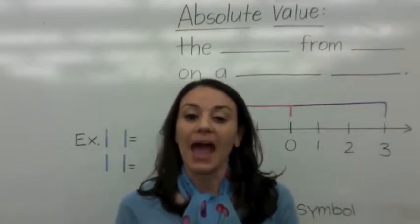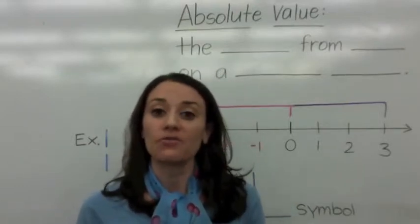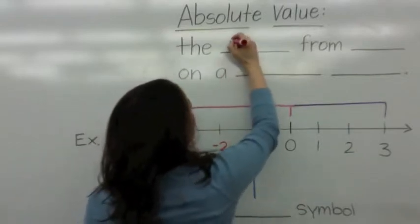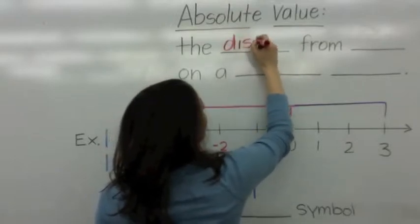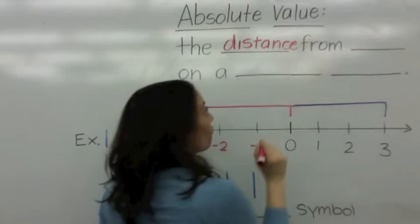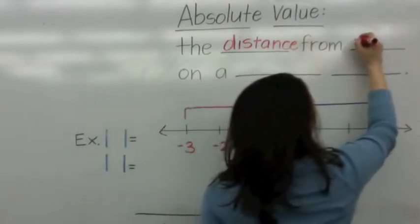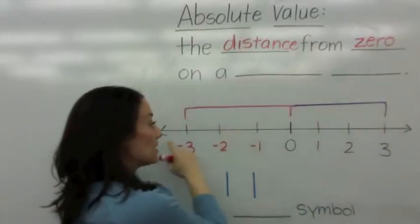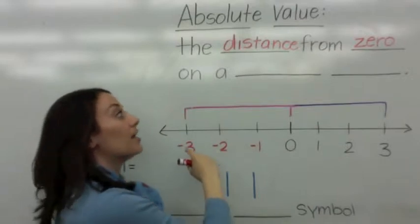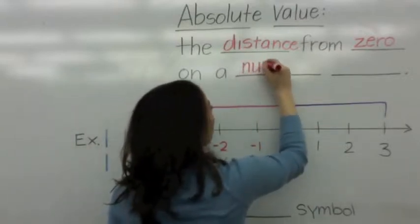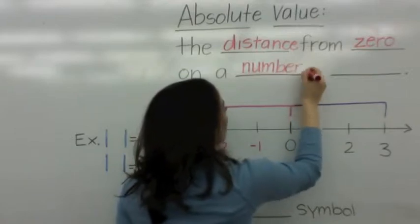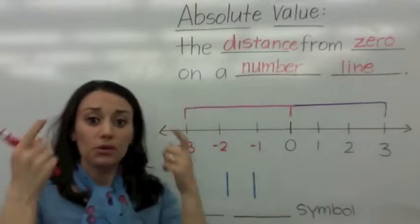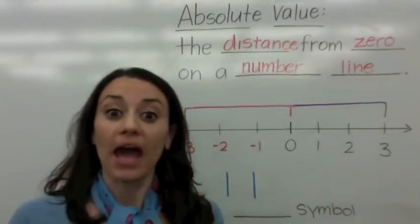So let's start with the concept. Absolute value is defined as the distance from zero on a number line. So when you think absolute value, you have to think about distance.